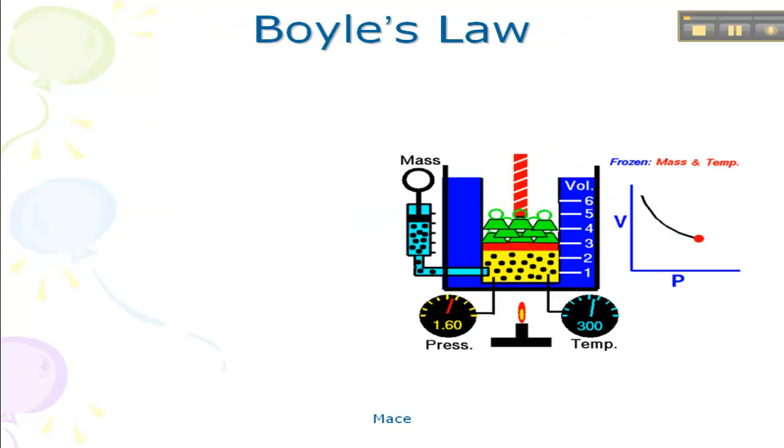So here's the first graph that you have. What I want you to do is to draw this graph and notice what's happening here. As we compress the gas down, we're keeping the temperature constant, we're keeping the mass constant, so what's changing is the volume and the pressure.